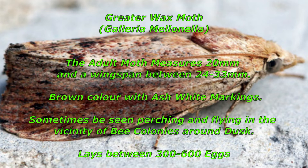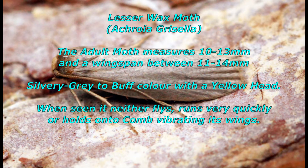On emerging, adults mature and usually mate within the hive. The lesser wax moth adult has a length of approximately 10 to 13 millimeters and a wingspan of 11 to 14 millimeters, and is silvery gray to buff in color with a yellow head. When seen, it either flies, runs very quickly, or holds onto the comb vibrating its wings. Each female can lay between 250 and 300 eggs. Though larvae consume honey, pollen, and wax, they are not found in comb occupied by bees and do not damage hive components. Lesser wax moth larvae are unable to compete with greater wax moth larvae, as the latter will eat them.